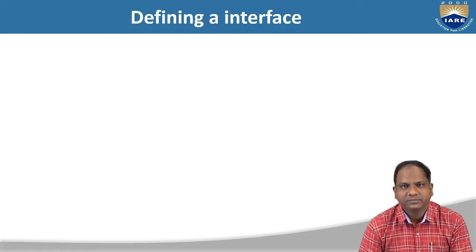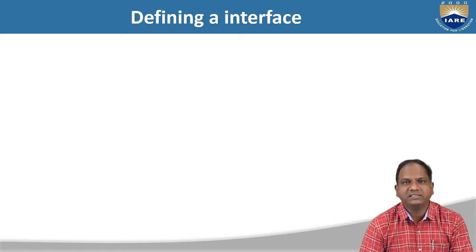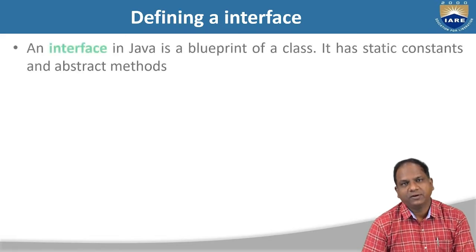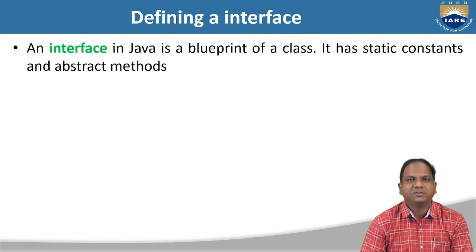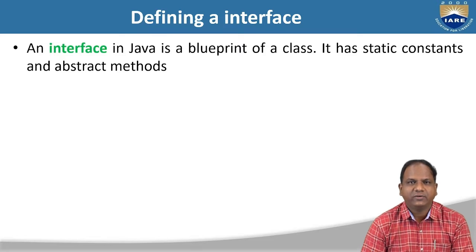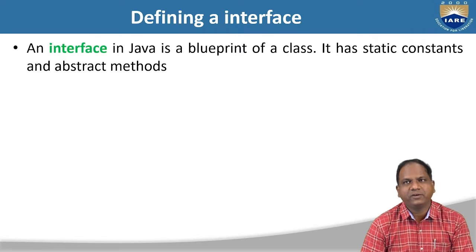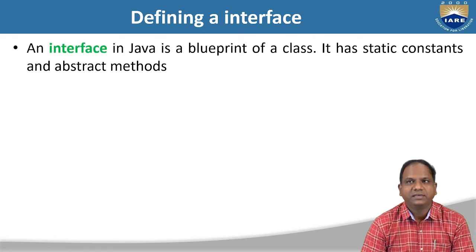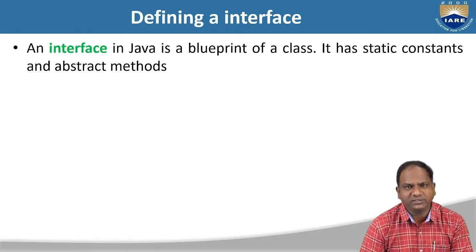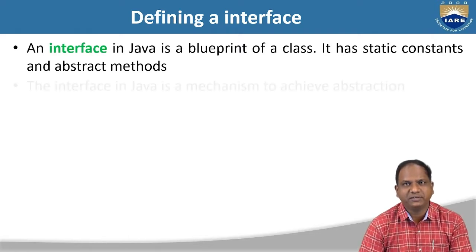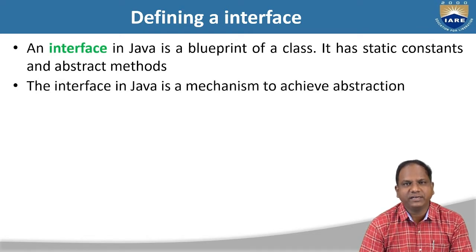The first topic we are going to see is how you can define an interface. Before going to defining an interface, you have to know what actually an interface is. It is like a blueprint of a class. Like your class contains members — variables as well as methods — your interface also has variables, but these variables are special, nothing but static constants.